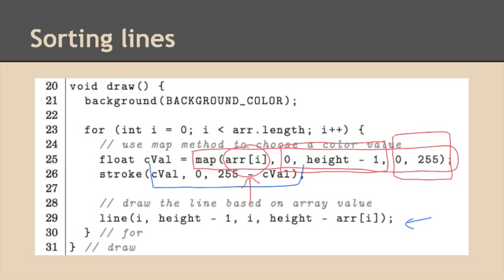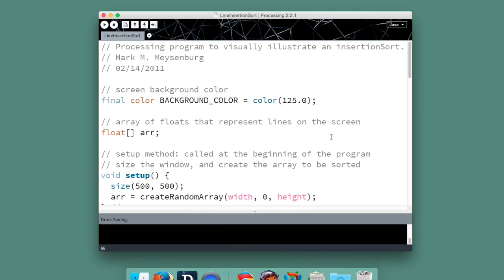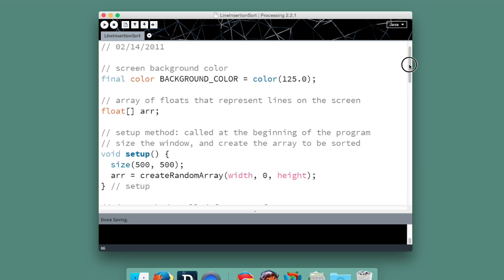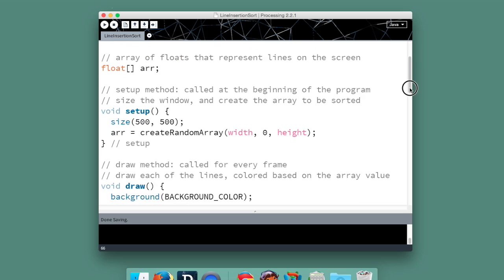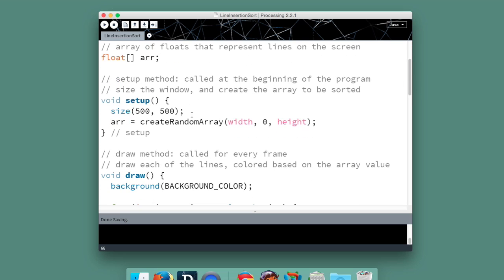Real quick, we'll just show you what that program looks like when we run it. So here's our processing program to do this line insertion sort. We won't look at the code in great detail, but we create a background color, a reference for our object array. In the setup method, size the window, create a random array of floats, width of them that go between zero and height.